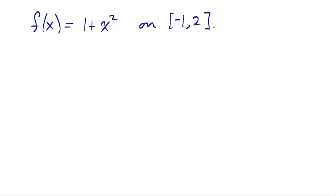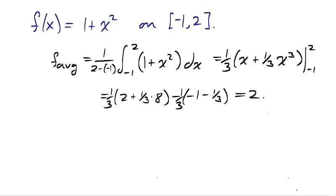Let's take the polynomial 1 plus x squared on the interval negative 1 to 2. The average value of f is found by integrating from negative 1 to 2, and then dividing by 3, the length of the interval ab. Using the fundamental theorem of calculus part 2, the average value of f on the interval negative 1 to 2 is 2.